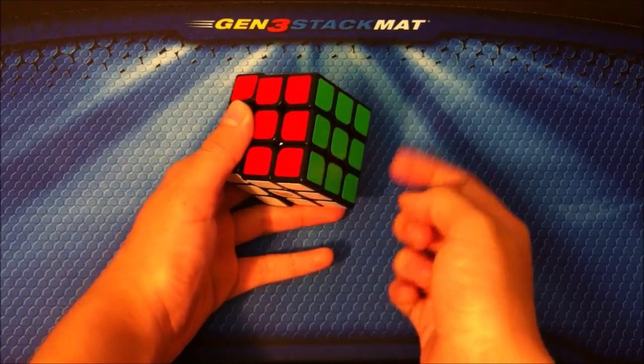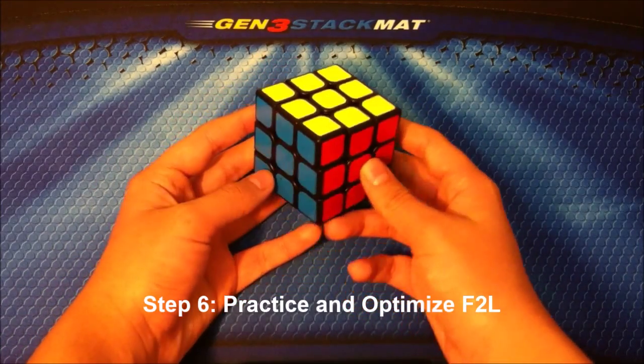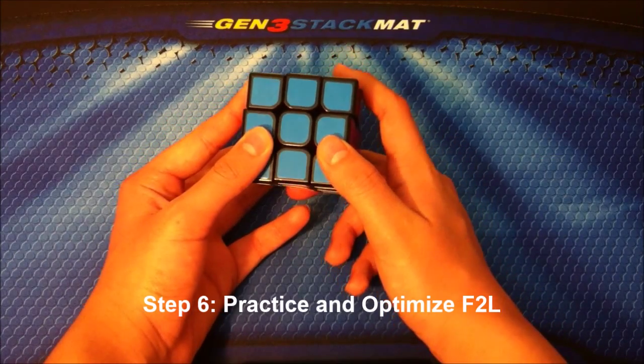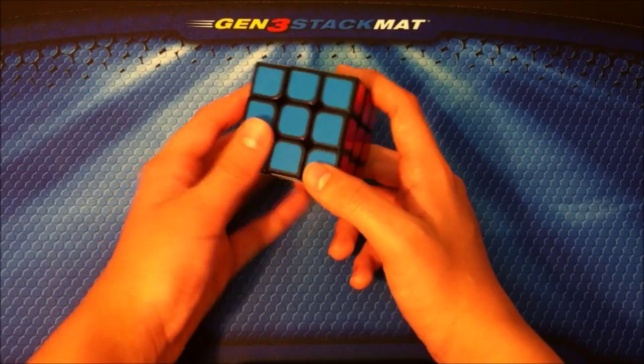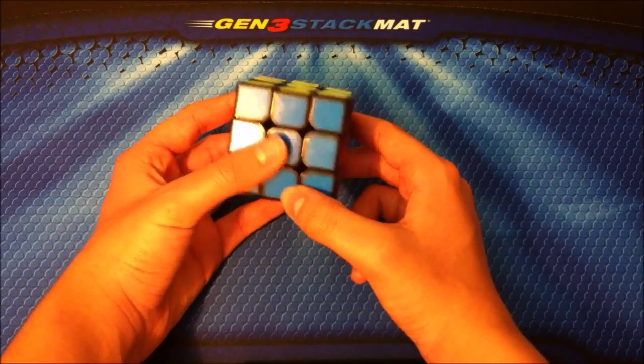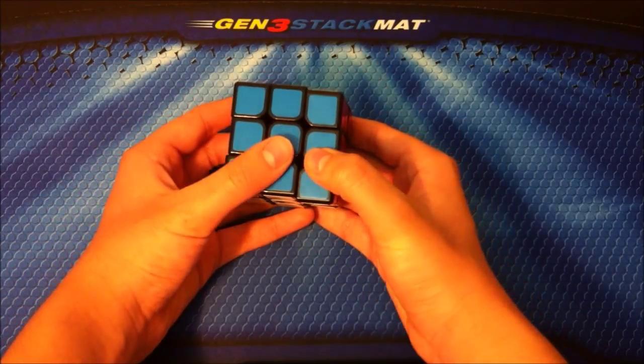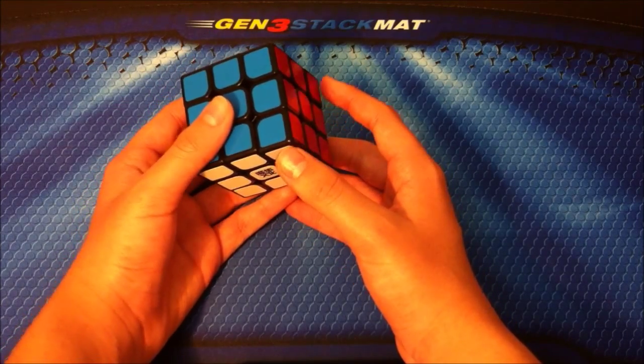Step six: practice F2L, as F2L is the step of CFOP which takes up the majority of the solve. Practice it a lot, and after you learn F2L, keep practicing those F2L cases so you can get faster at them. This way you can get to know your F2L cases a lot better.